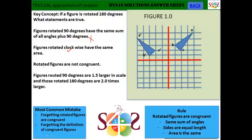The third statement is: rotated figures are not congruent. Rotated figures are congruent since here on the rules we have that rotated figures are congruent. So the third statement is false.